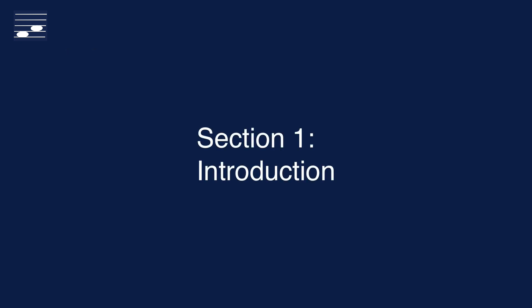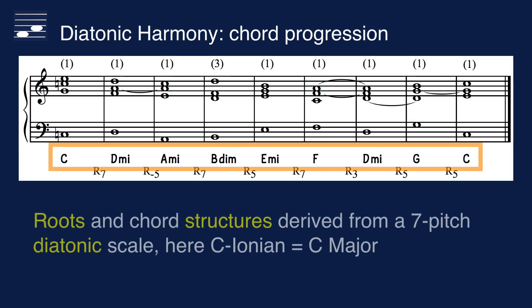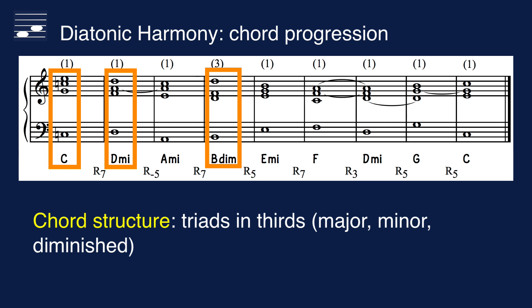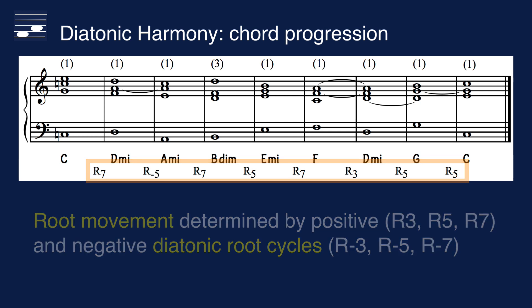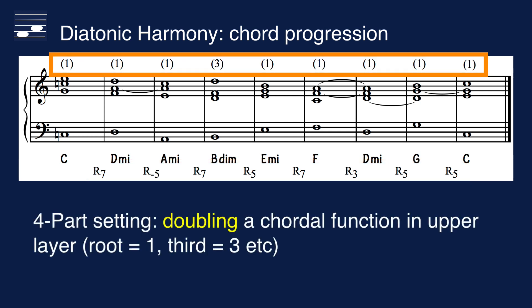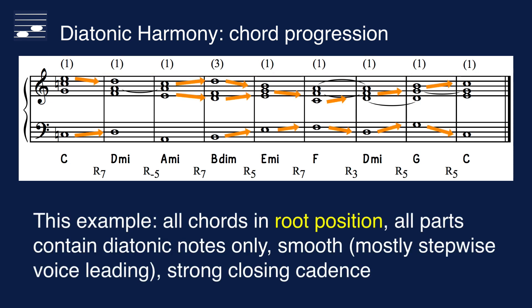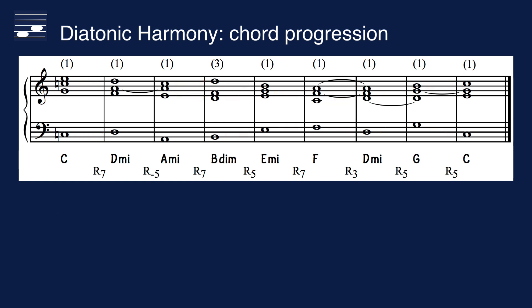As an introduction, let's consider a diatonic four-part chord progression. Both the chord roots and structures are derived from a seven-pitch diatonic scale, here C major. The harmony uses chords and thirds. The root movement is based on a number of positive and negative root cycles. If you are not familiar with the diatonic root cycle concept, you may want to watch the tutorial on Schillinger nomenclature on this channel. In a four-part setting one chordal function is doubled in the upper layer — here it is the regular and frequent doubling of the root. The example has all chords in root position, with smooth, mostly stepwise voice leading. The progression closes with a strong dominant tonic cadence, a familiar classical music idiom and a standard voice leading exercise in tonal harmony.